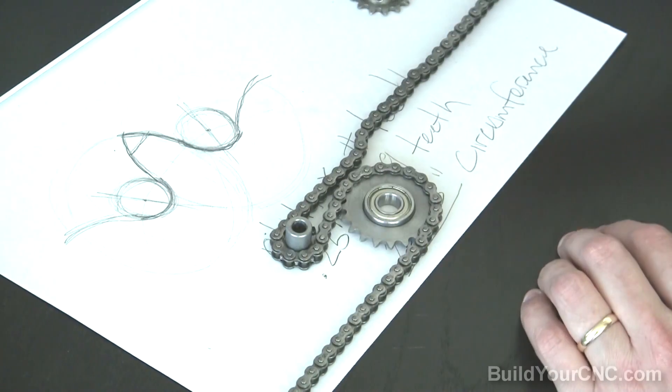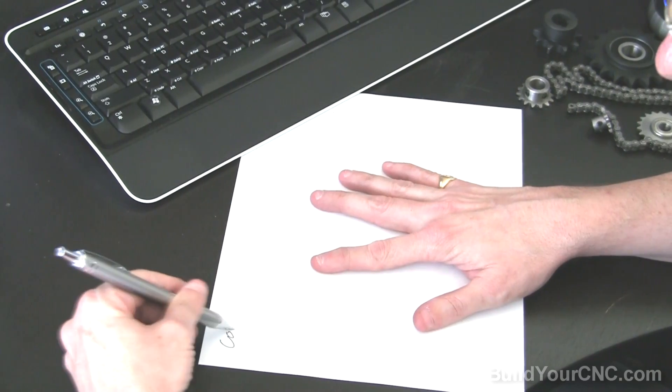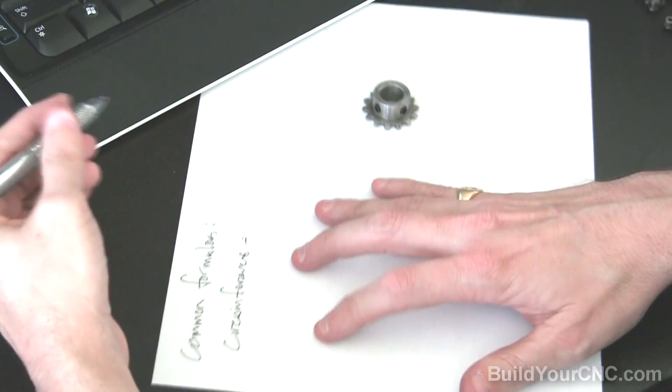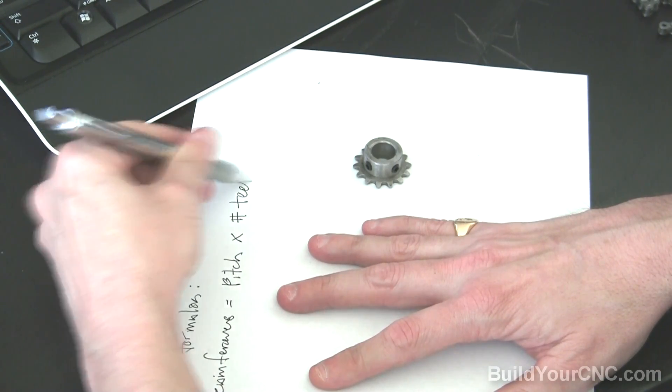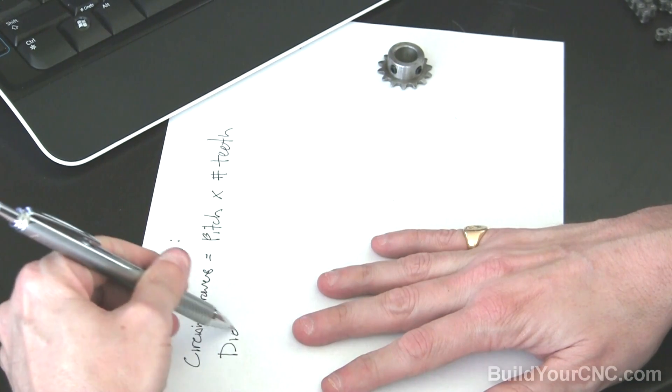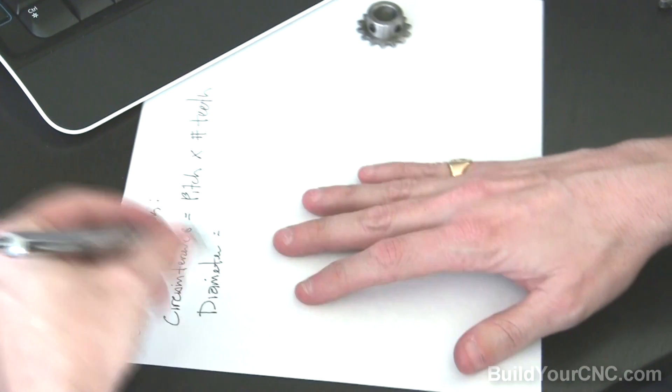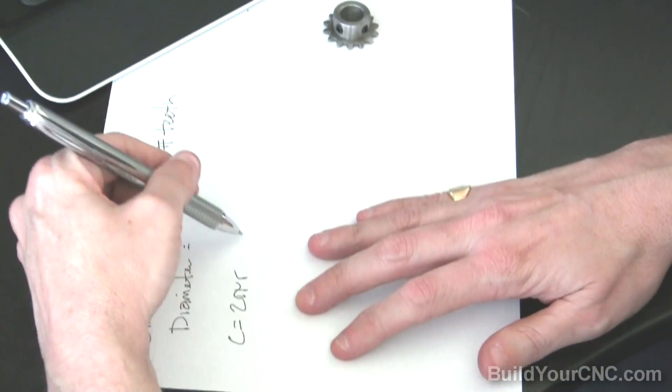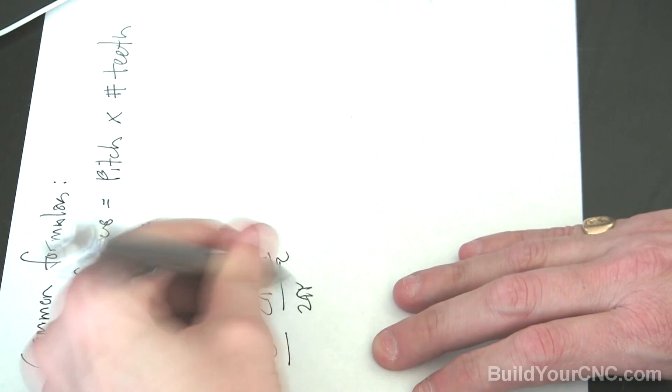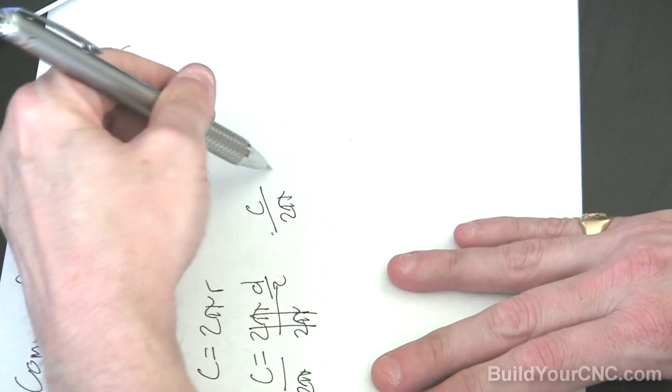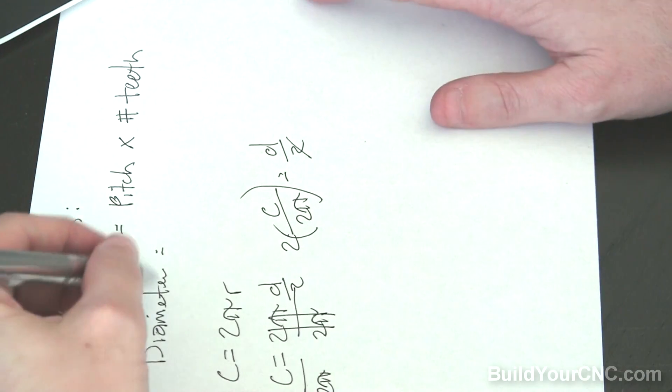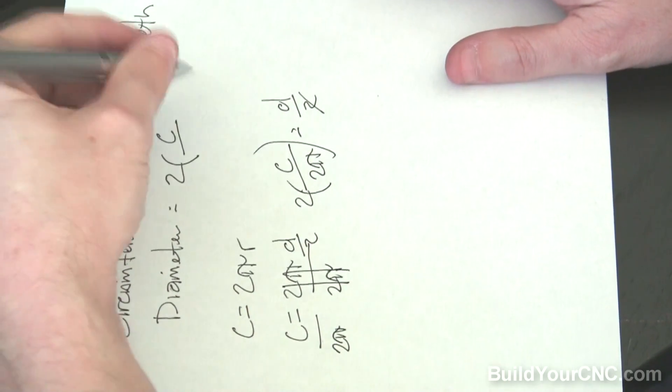Common formulas associated with sprockets are circumference, which would be equal to the pitch times the number of teeth. If you need to find the diameter or the radius to this pitch circle, then you can find that out by using the circumference, actually converting from the circumference. So circumference is equal to 2πr. R is also equal to diameter divided by 2, so circumference is equal to 2π times diameter over 2. So now we have circumference over 2π is equal to the diameter over 2. We can take the 2 out and multiply it by 2 on this side. So the diameter is equal to 2 times the quantity of the circumference over 2π.